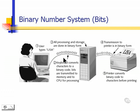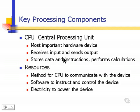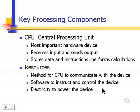Key hardware components include the CPU, or central processing unit. It's the most important device in the computer because it receives input and sends output. It also stores instructions and resources — for example, a method for the CPU to communicate with a device, software to instruct and control a device, and of course, electricity to power the devices.